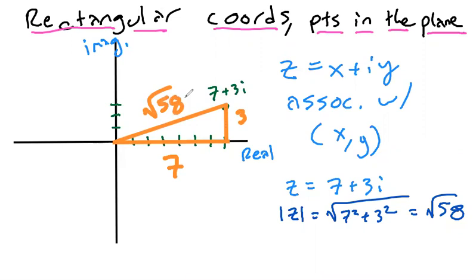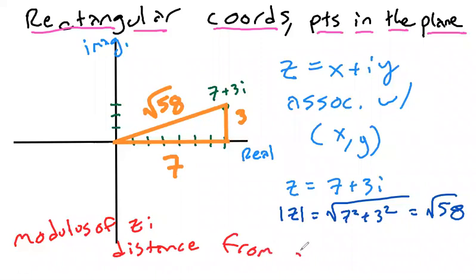So using this kind of geometric representation, then we kind of conclude here that the modulus of z is the distance from the origin in this kind of drawing sense.